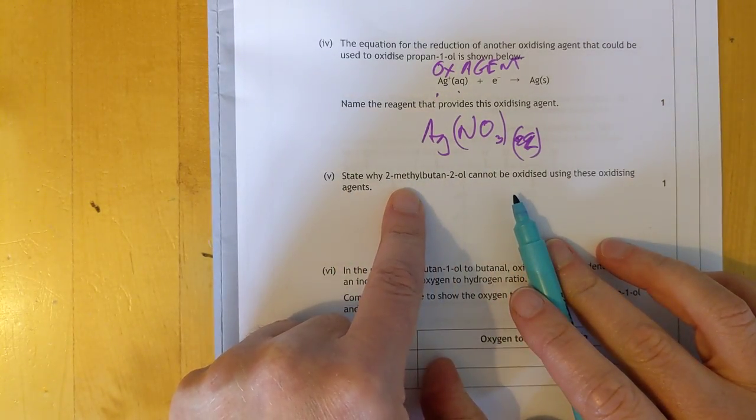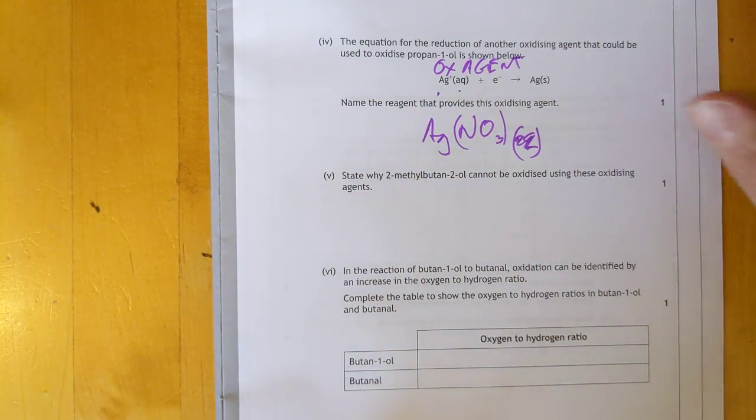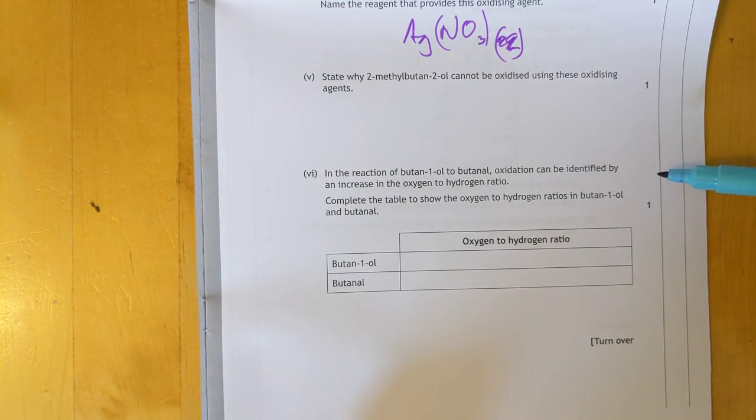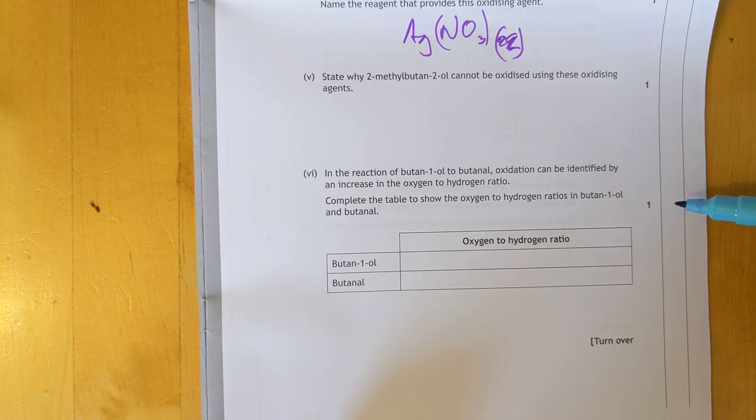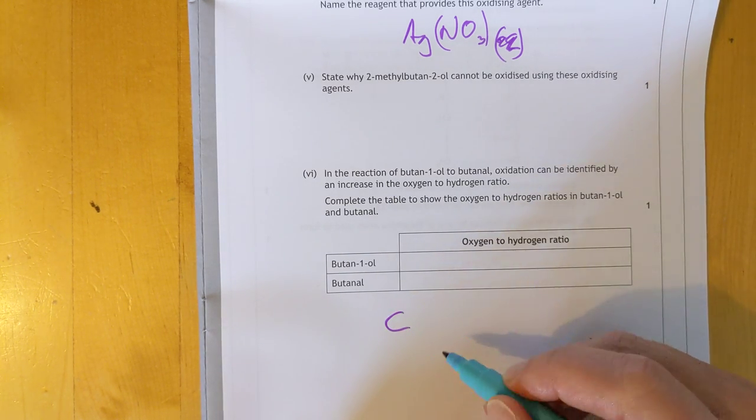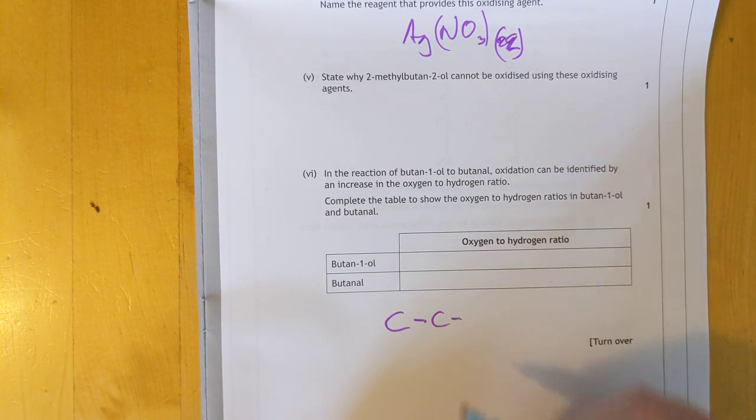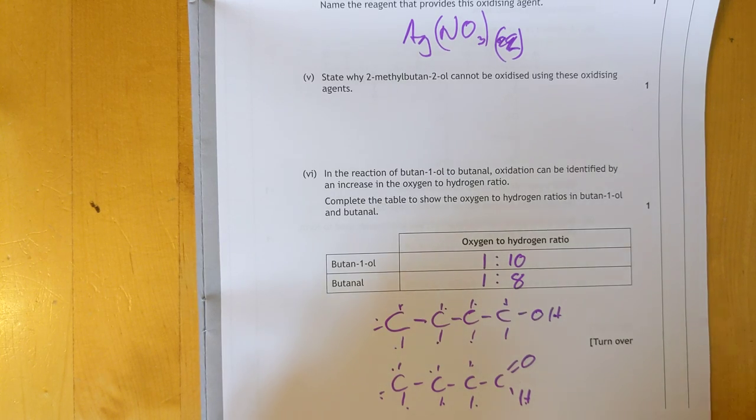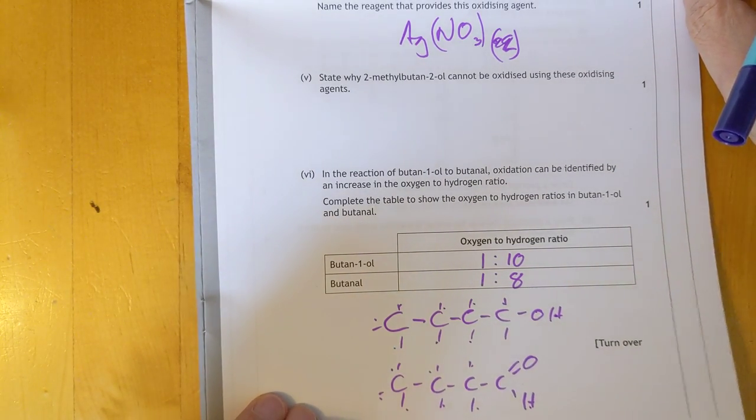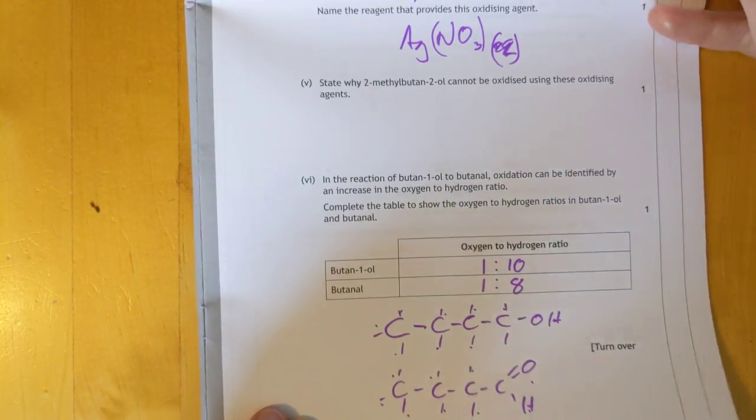It's a tertiary alcohol. Simple answer. Two-methyl-butan-2-ol. It cannot be oxidized. Tertiary alcohol. What's going on here? The oxygen-to-hydrogen ratios in butanol. Are they actually asking you to work it out? That's a bit donkey work, that sort of question. That'll be that incredibly chemistry-related question sorted out. I suppose it is. That's a bit harsh, because it relies on your knowing the structure of butanol.